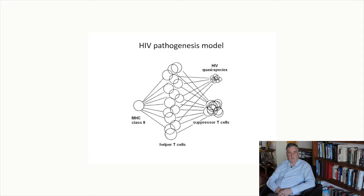In addition to suppressor cells being mutually selected with helper T cells, there is a competing co-selection process of HIV with the helper T cells. That means both HIV and the suppressor T cells are subject to the same co-selection criteria, namely interacting with as many helper T cells as possible. This means that with time, HIV resembles the TS2 population more and more, placing HIV right at the heart of the entire system.